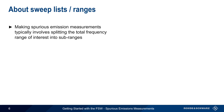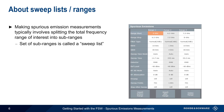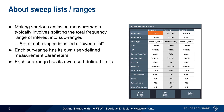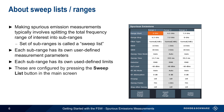Configuring Spurious Emissions measurements usually begins with splitting the total frequency range of interest into sub-ranges. This set of sub-ranges is referred to as a sweep list. Each sub-range has its own user-defined measurement parameters and its own limit lines. Configuring these ranges, or sweep lists, is done by pressing the Sweep List button on the main screen.